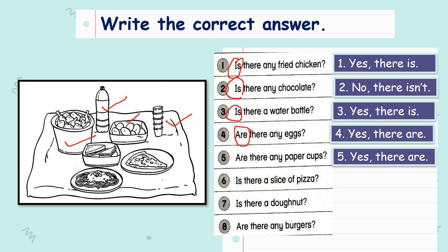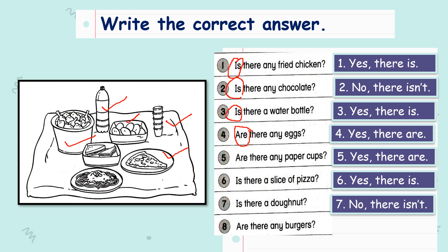Number six: is there a slice of pizza? Well done, the answer is yes, there is. Number seven: is there a doughnut? Well done — no, there isn't. What about the last question? Are there any burgers? Very good, the answer is no, there aren't.